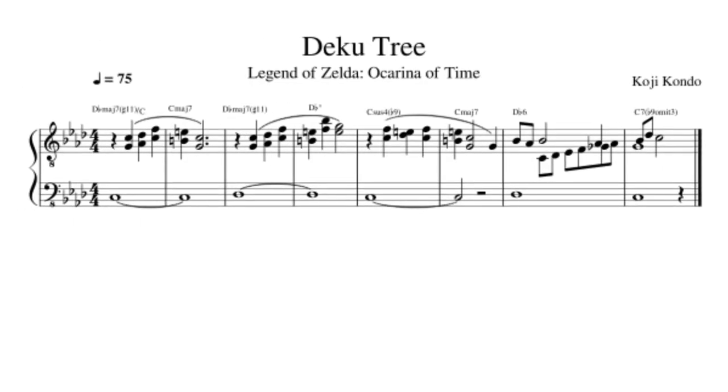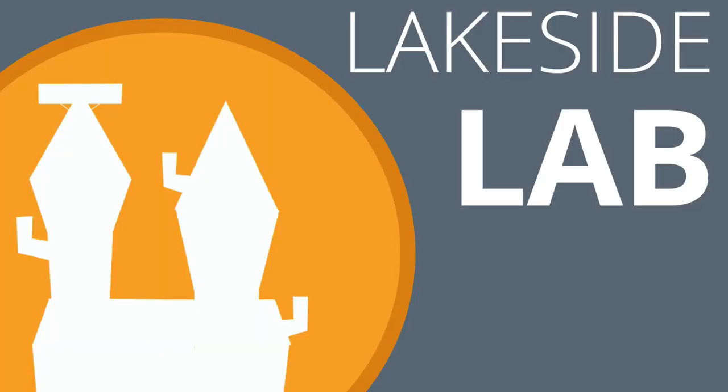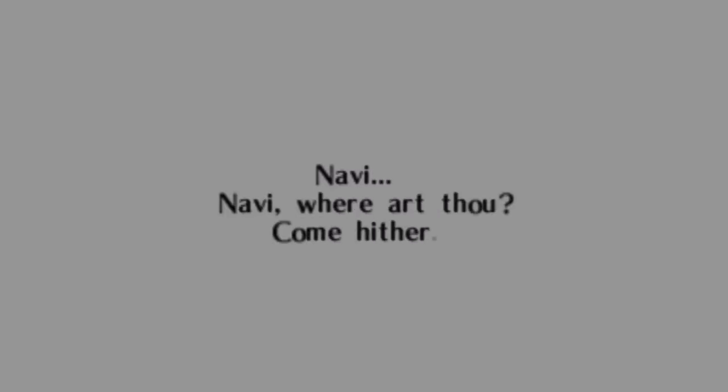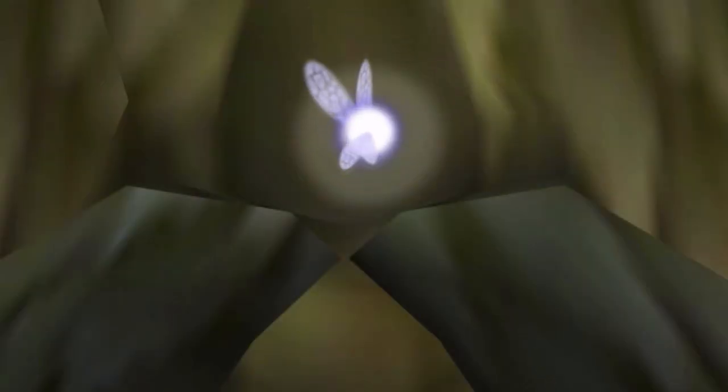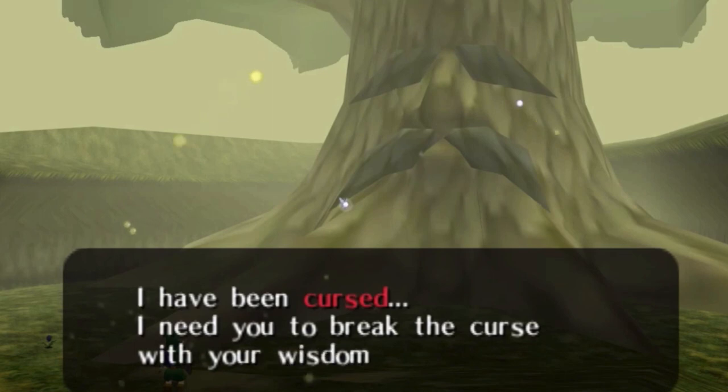An effective way to tell a story in instrumental music is with varying degrees of tension and release. The way Koji Kondo supports the narrative of the Deku Tree with music — only eight bars at that — is astounding. Deku Tree is the aptly titled piece that plays whenever the Deku Tree is speaking, namely when he's instructing Navi to awaken Link, and when he's narrating the plight of Hyrule to the player upon their first interaction in the game.